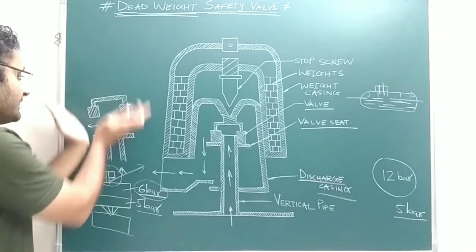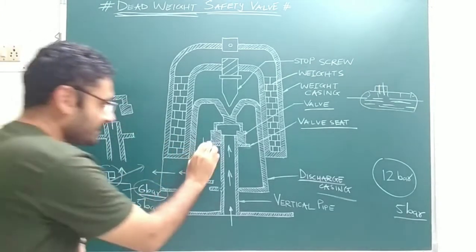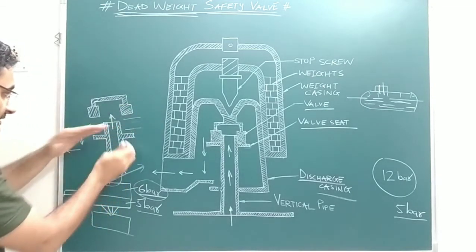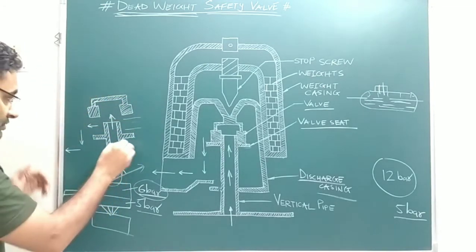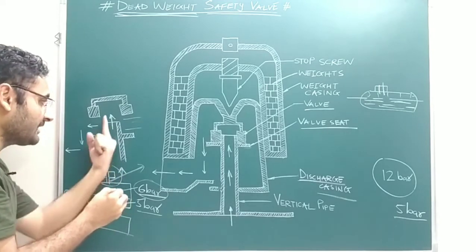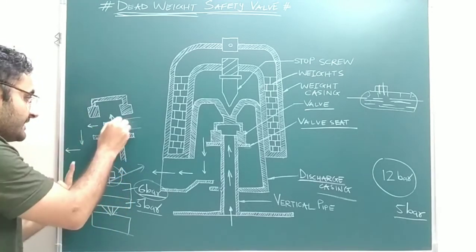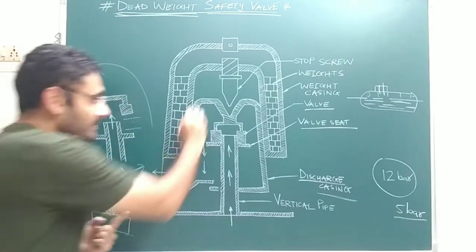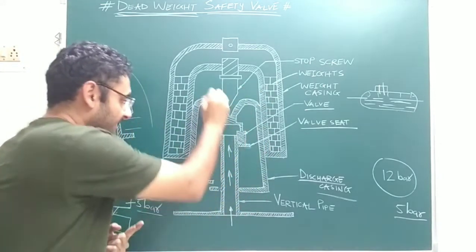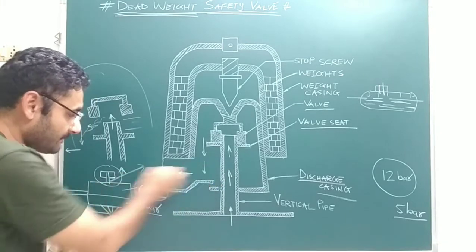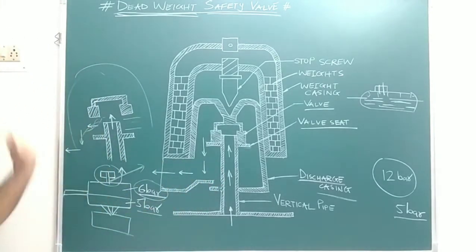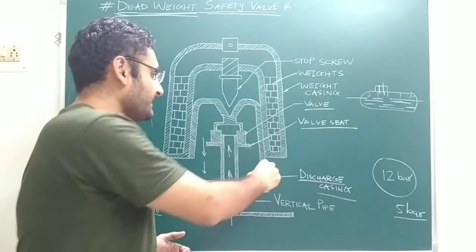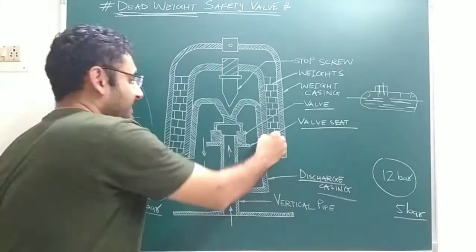The discharge casing is the portion where, due to pressure, when the valve is lifted from the valve seat, a gap is created between the valve seat and the valve. From the vertical pipe, whatever extra pressurized steam is there, it will enter the discharge casing, and from the discharge casing that extra pressurized steam will be rejected into the atmosphere.